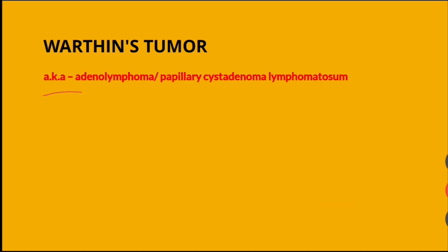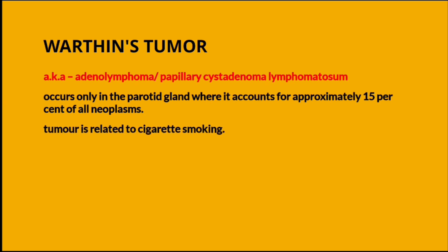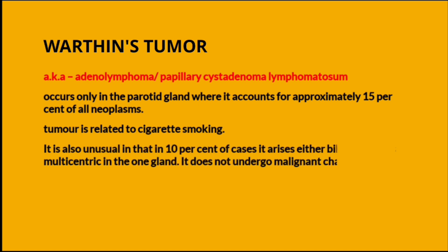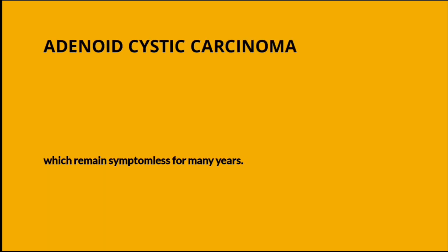Warthin's tumor has been asked repeatedly. It is also known as adenolymphoma or papillary cystadenoma lymphomatosa. It occurs only in the parotid gland and is mainly related to cigarette smoking. An important point: on a 99mTc pertechnetate scan, Warthin's tumor shows as a hot spot, whereas all other tumors show a cold spot.